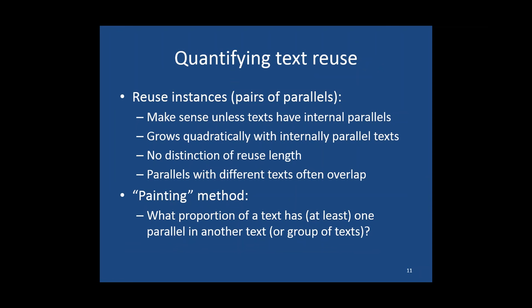I now want to move on to talk about the bigger picture — looking at trends in text reuse across the corpus. To do that, we need a way of quantifying text reuse at the level of a text. The first naive approach would be counting reuse instances or numbers of parallels. This makes sense for some cases with relatively little text reuse, but the big problem is that many Pre-Qin and Han texts have parallels within themselves as well as to other texts. If you count simply by reuse instances, and both texts have the same passage effectively repeated over and over, the number of instances increases in a quadratic fashion — you end up over-counting.